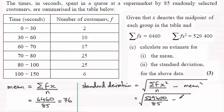And then minus the mean, which we found out is 76, and we square it. And if you work this out, you get 21.265 and so on. And if we round this to three significant figures, it's going to be 21.3 to 3sf.